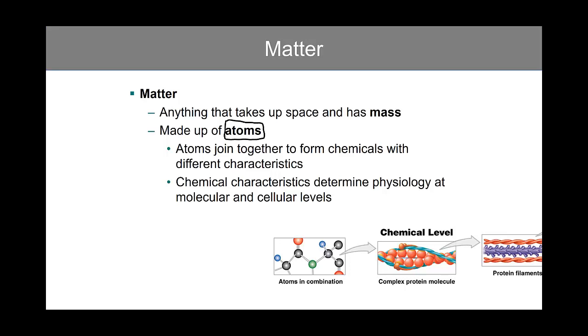Atoms join together to form chemicals and chemicals have varying characteristics, and it's these characteristics that ultimately determine the physiology at both the molecular and cellular levels.